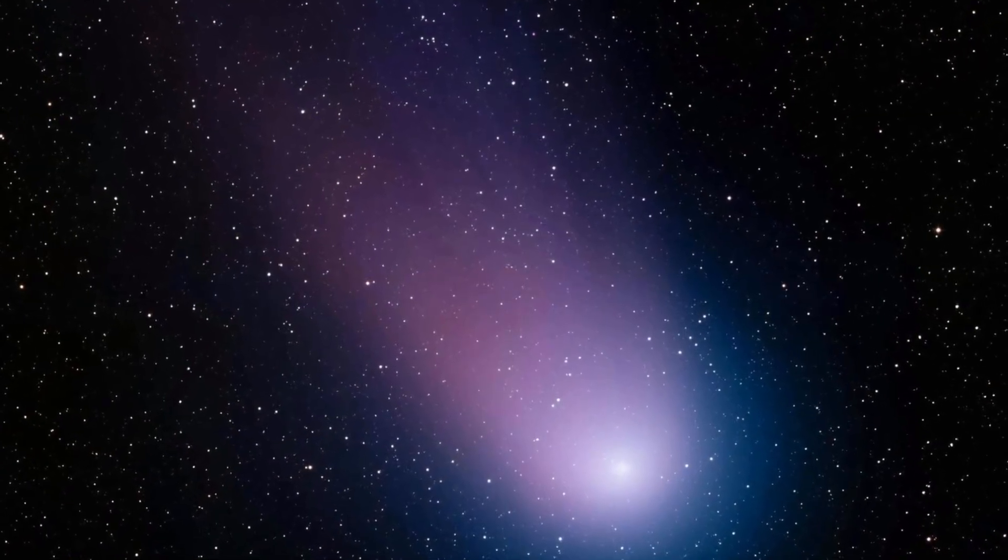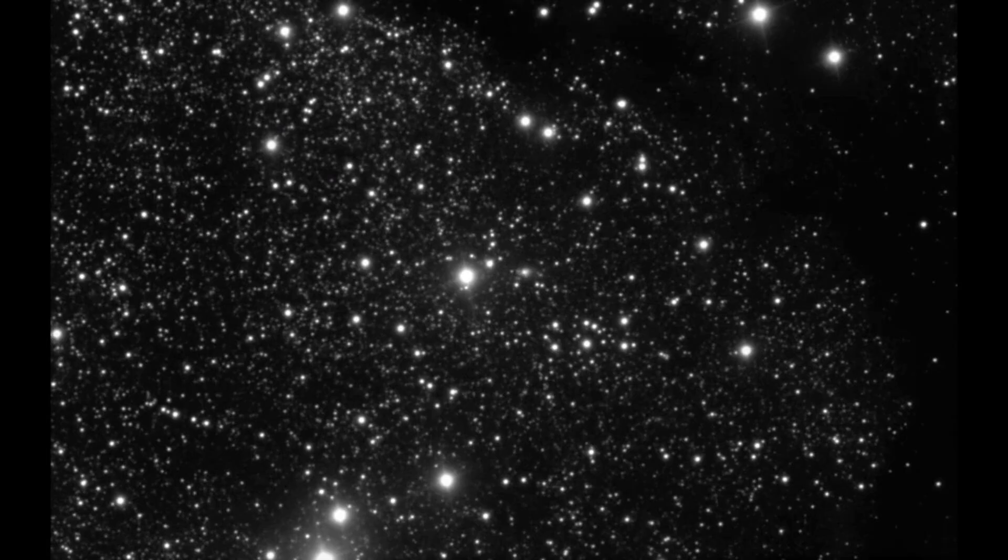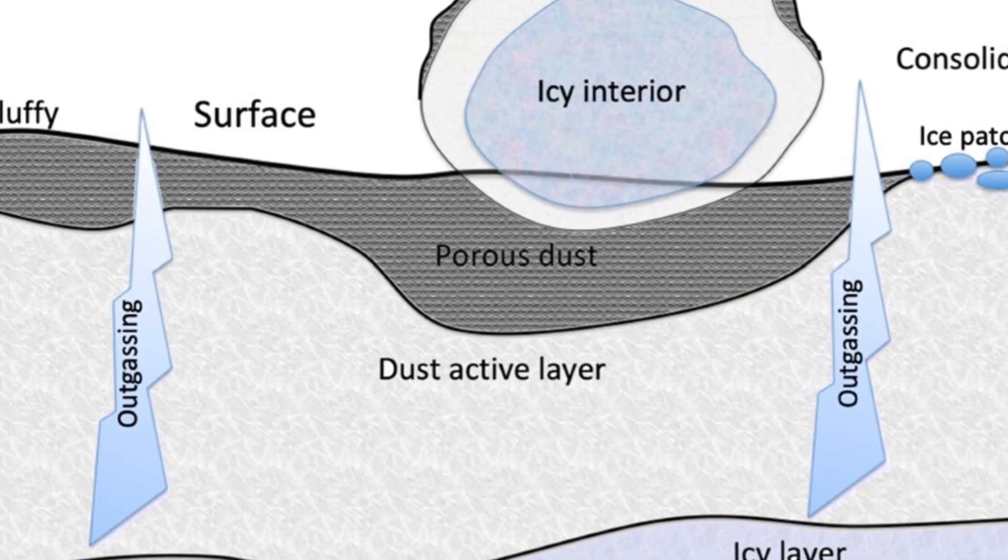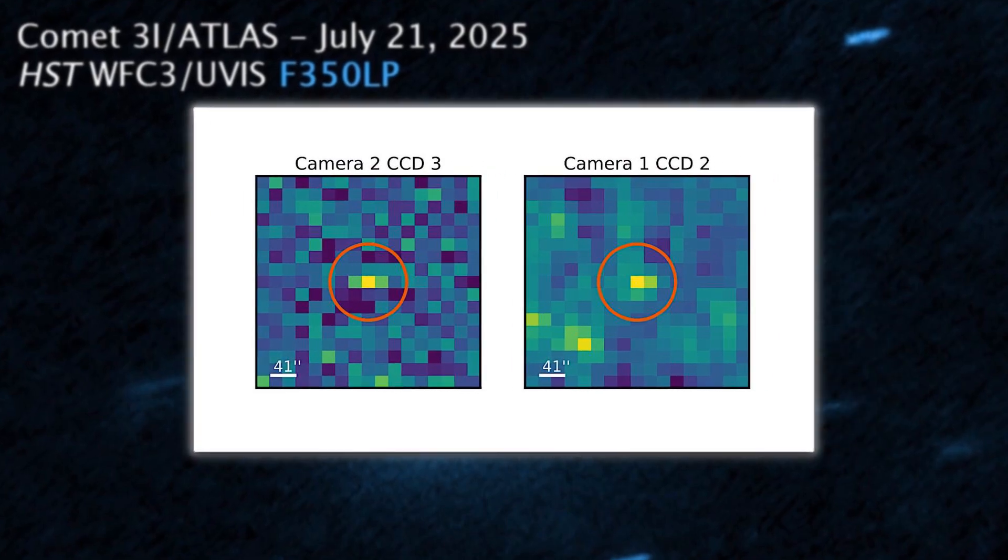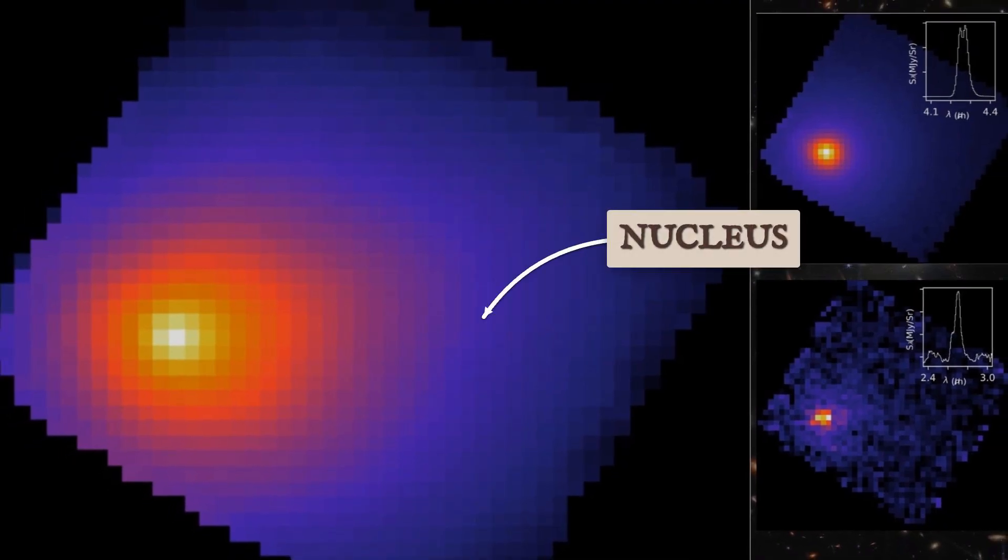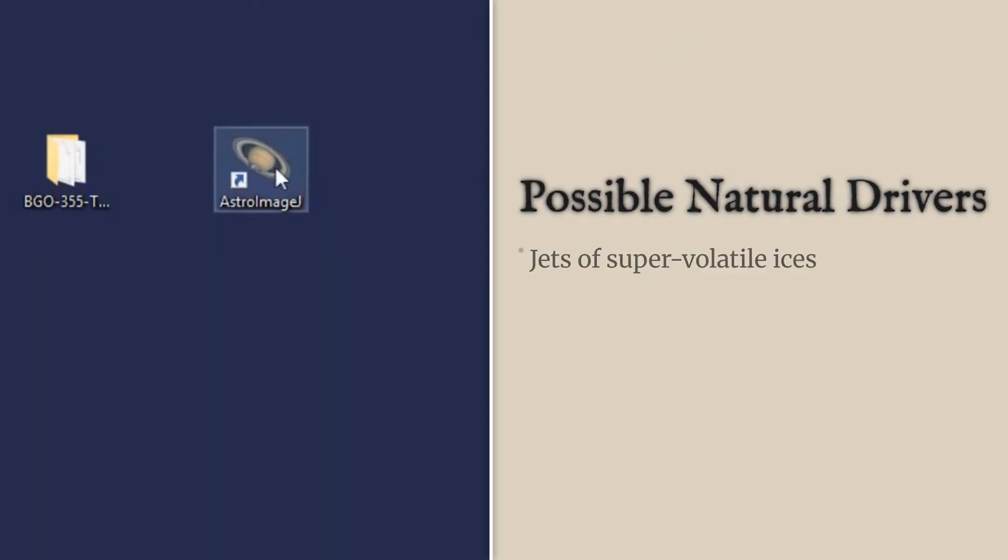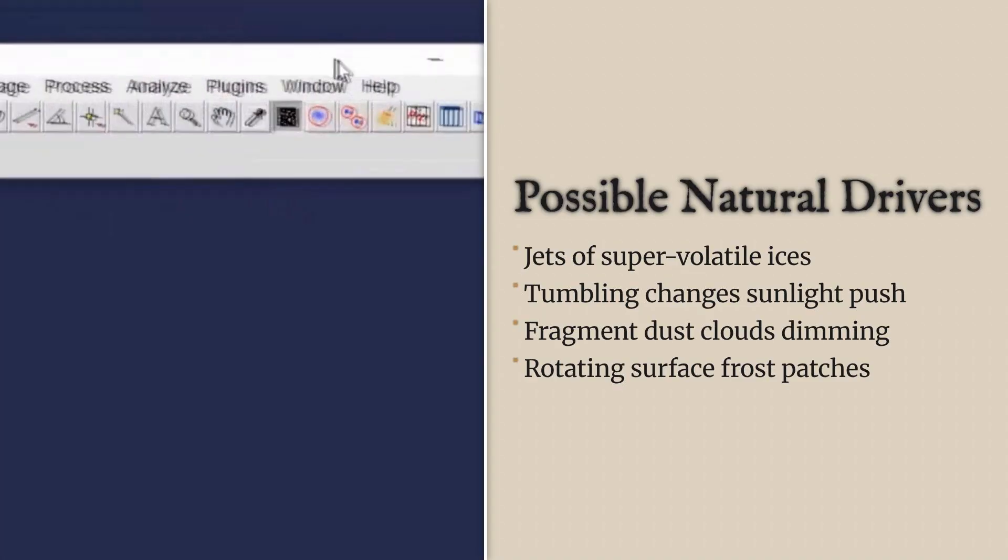A second possibility is dust-driven mass loss. Some comets shed fine particles without much gas, especially if their ice is buried beneath a crust. In this scenario, the object's brightness might change in the optical but not in the infrared, and the coma could be faint enough to blend into the background. Careful analysis of the light curve, tracking how the object dims and brightens, can test for this kind of hidden activity.